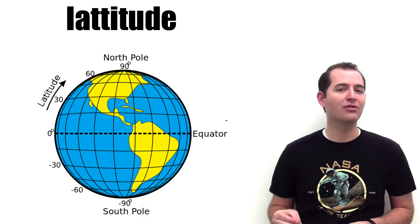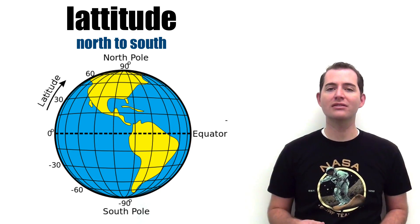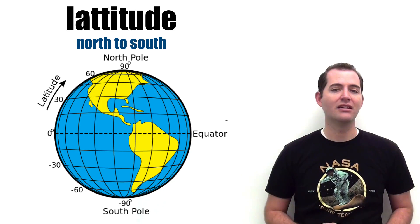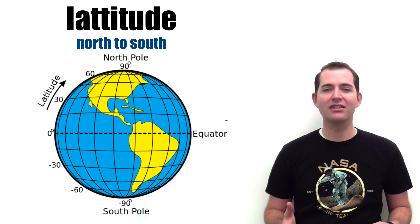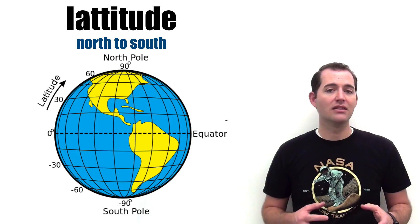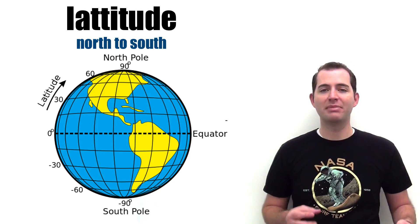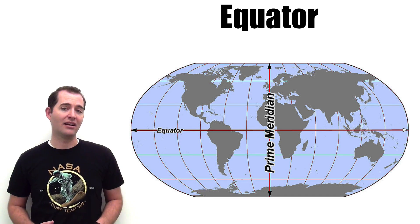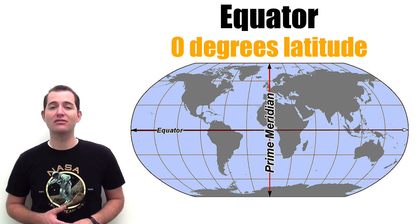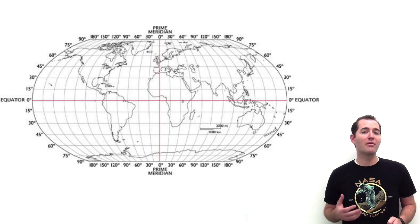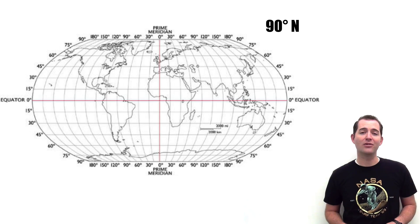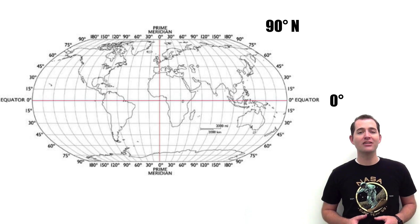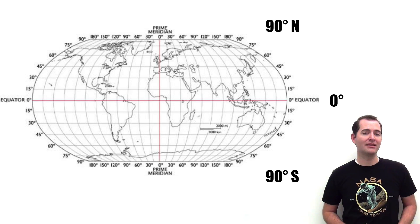Latitude is a geographic coordinate that denotes the north or south position of a point on the earth. These are also expressed in degrees north or degrees south. Latitude is also known as parallels because they are parallel lines that circle the earth. One specifically named line that denotes latitude is known as the equator, and it is at zero degrees of latitude. Latitude goes from 90 degrees north at the North Pole to zero degrees at the equator to 90 degrees south at the South Pole.